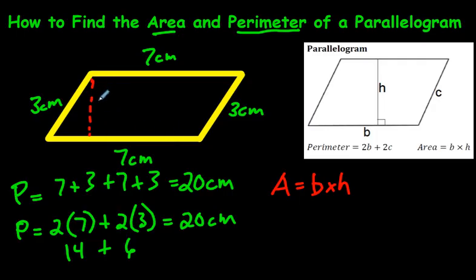So let's say this distance here is two centimeters. Okay, so if you had to find the area of this parallelogram, all you would have to do is take the base, which is seven, and multiply that by the height, which is two. The answer would be 14.